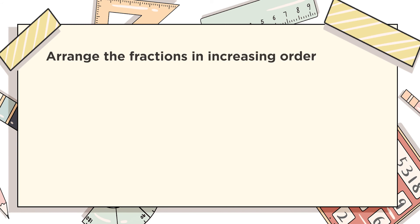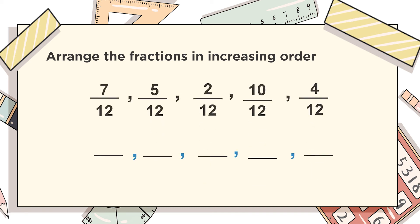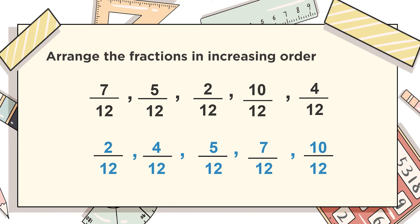The next topic in fractions is ordering fractions. We need a set of fractions with a common denominator. Here all denominators equal 12, with different numerators. Arranging in increasing order means smallest to largest. The smallest numerator is 2, so first comes 2/12, then 4/12, then 5/12, then 7/12, and finally 10/12. In this way we have arranged the fractions from smallest to largest in increasing order.